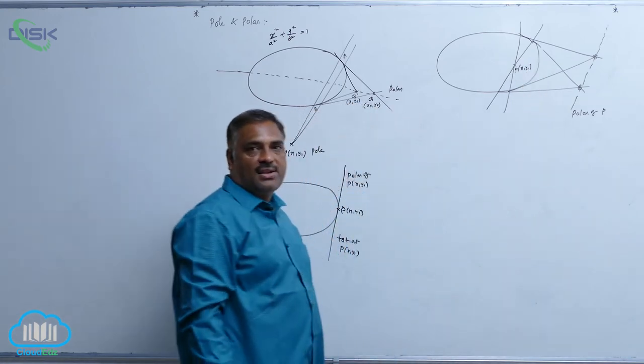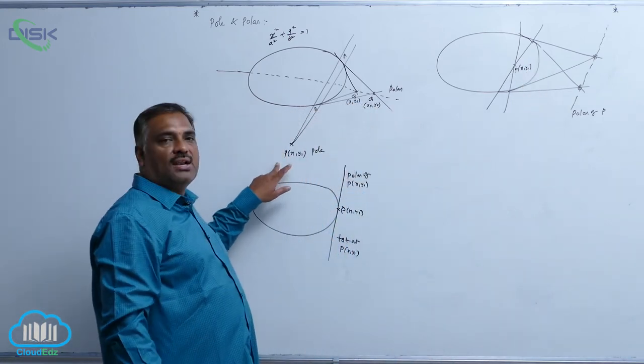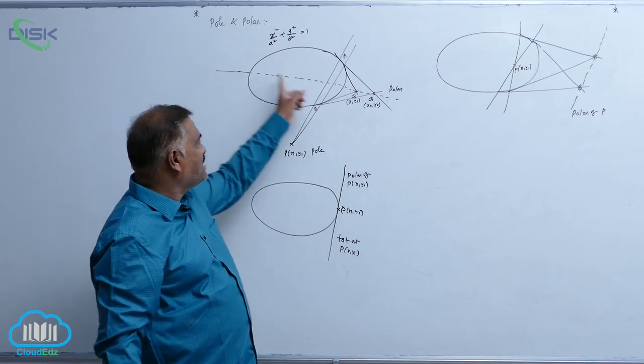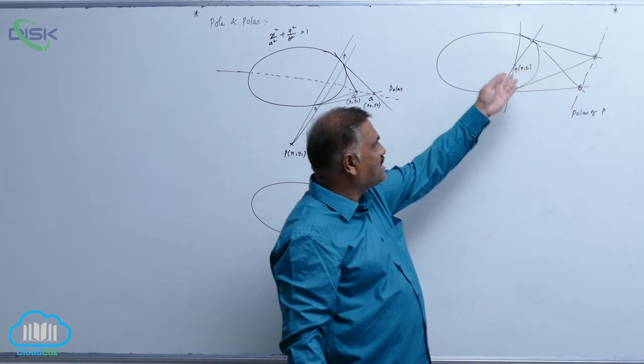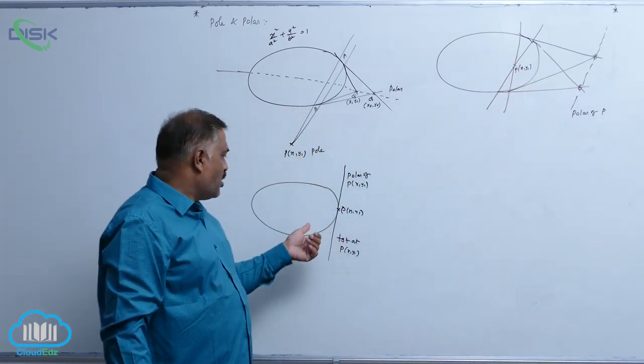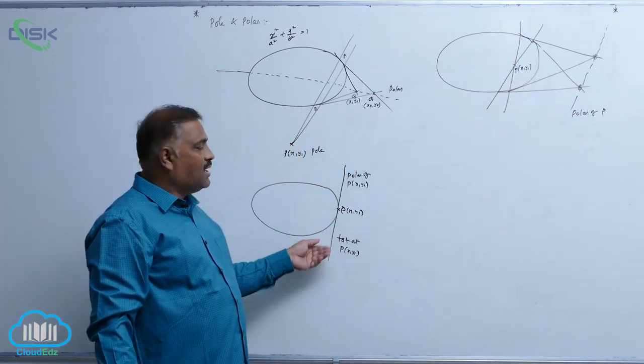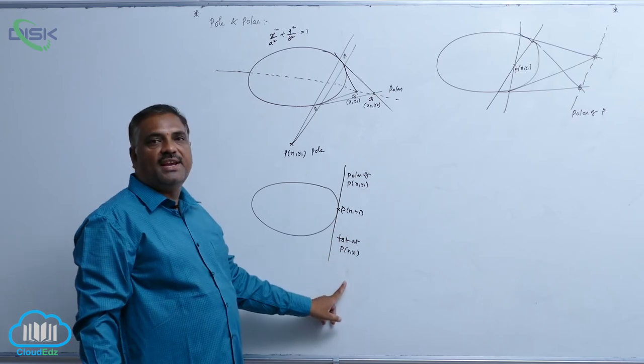We observe that there are three cases here. When the point lies outside, polar is intersecting the curve. When the point lies inside, polar lies outside the curve. When the point lies on the curve, it coincides with tangent at P(x1, y1).